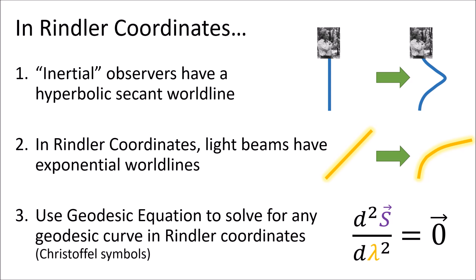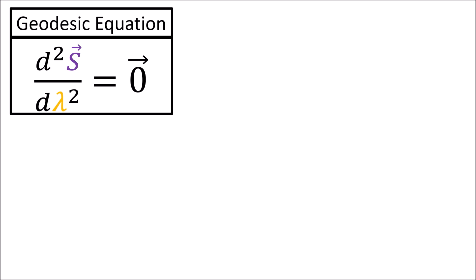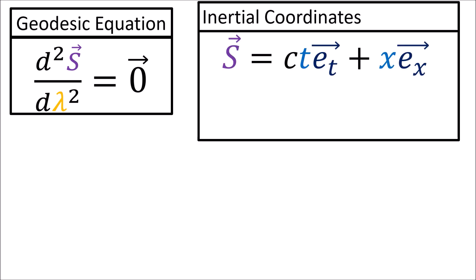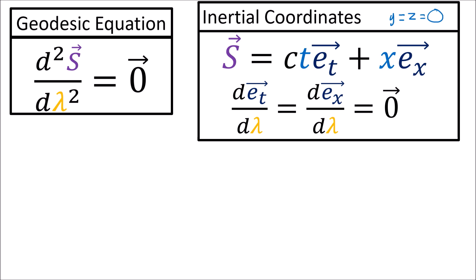I will also show how the geodesic equation relates to the Christoffel symbols discussed in the last video. Let's start by looking at inertial world lines in an inertial coordinate system. The geodesic equation tells us that the second derivative of s with respect to a path parameter lambda is 0. In inertial coordinate systems, the four-position s equals ct times e_t plus x times e_x, if we ignore the y and z dimensions.